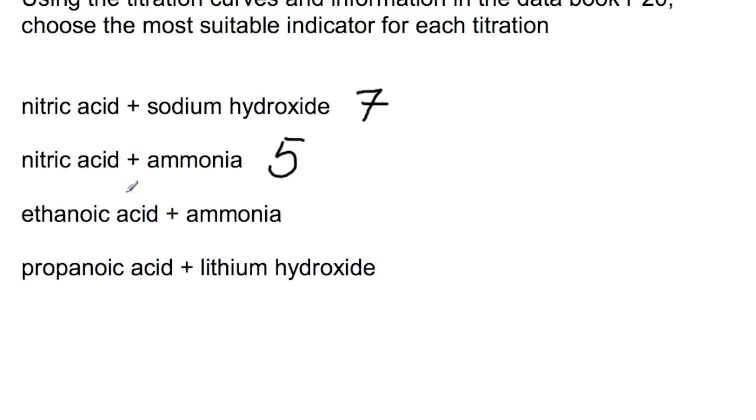For ethanoic acid and ammonia are both weak. Therefore, there is no indicator that we can use for that reaction.